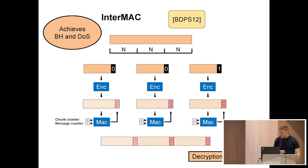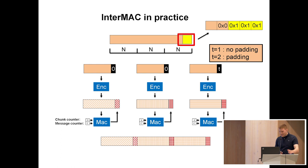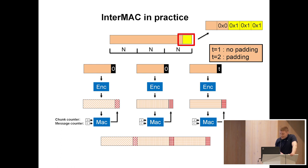We want to go ahead and implement this. But before we did that, we realized that BDPS kind of cheated, because this scheme only supports messages that are a multiple of n, which is not really good in practice. Luckily, there's an easy way to resolve this: we just apply some padding.